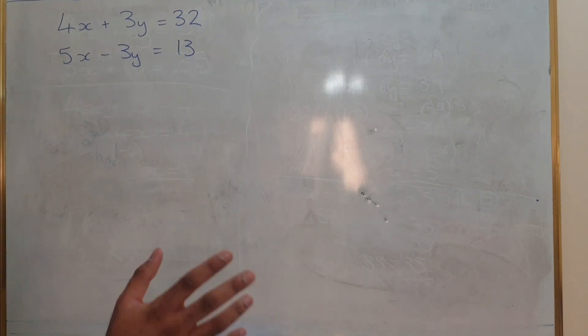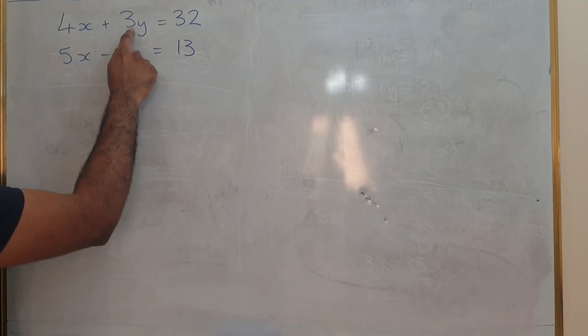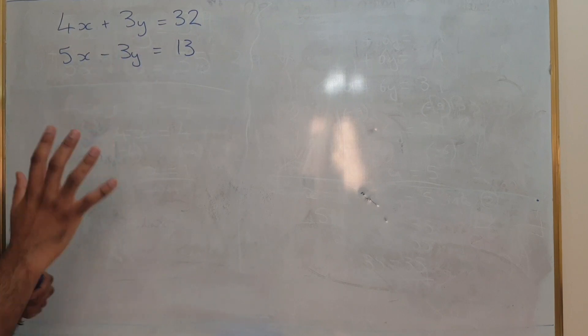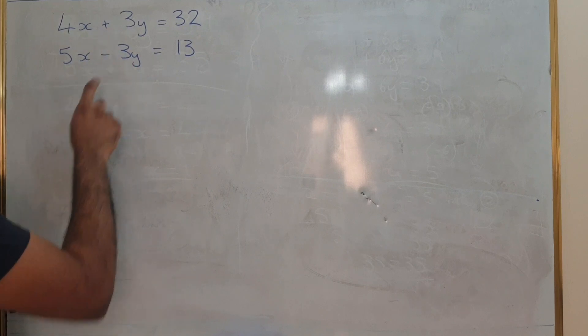So what do I mean by that? You've got the same coefficient in front of y, so it's 3y there and 3y there. However, the difference this time is you've got a plus in this equation and a minus in this equation.